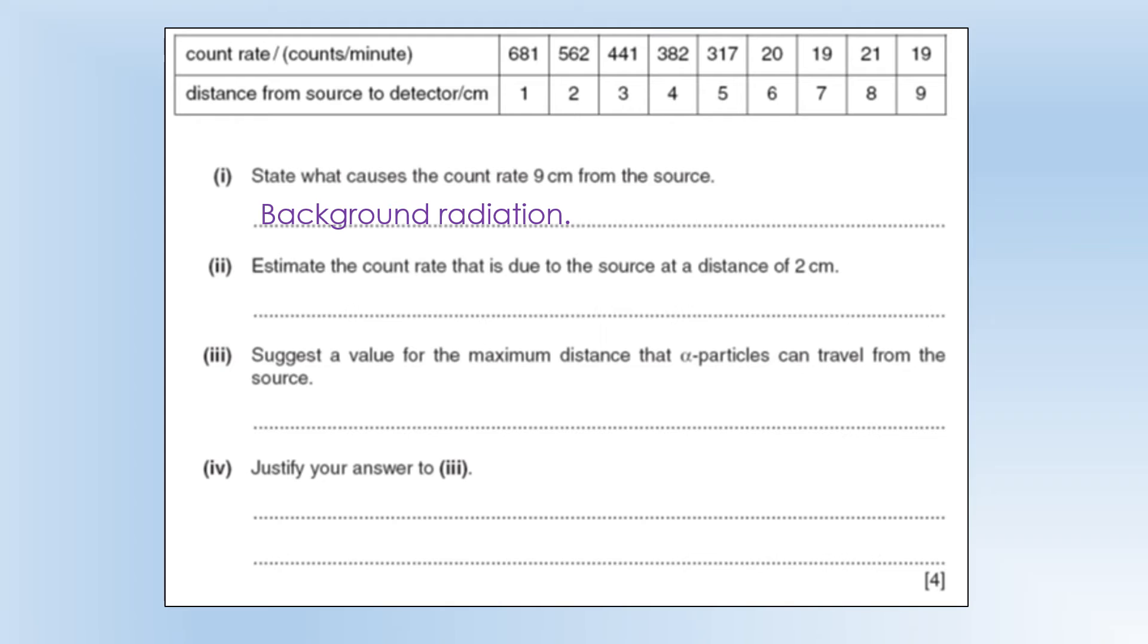Estimate the count rate due to the source at two centimetres. Well, we need to subtract background from the value to give us the counts from the source.